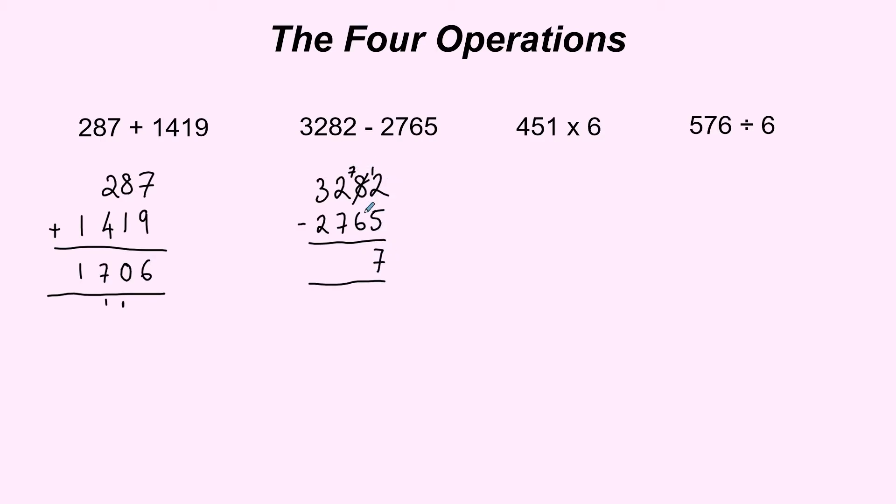Moving across seven take away six is one and just keep going until you've completed. Two take away seven we can't do. In this calculation we move across borrow from the three that becomes a two and bring that one across that we borrowed. Twelve take away seven is five and in the last column we've got two take away two which is zero. Okay so we've got 517 as our final answer there.